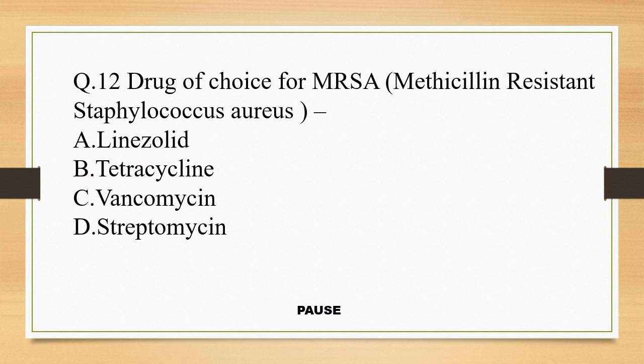Question 12. Drug of choice for MRSA — that means methicillin-resistant Staphylococcus aureus — is: option A, linezolid; option B, tetracycline; option C, vancomycin; and option D, streptomycin. And the right answer is option C, vancomycin. So drug of choice for MRSA is vancomycin.